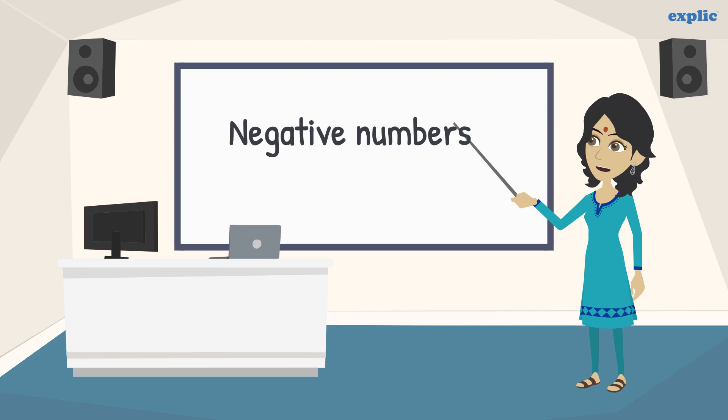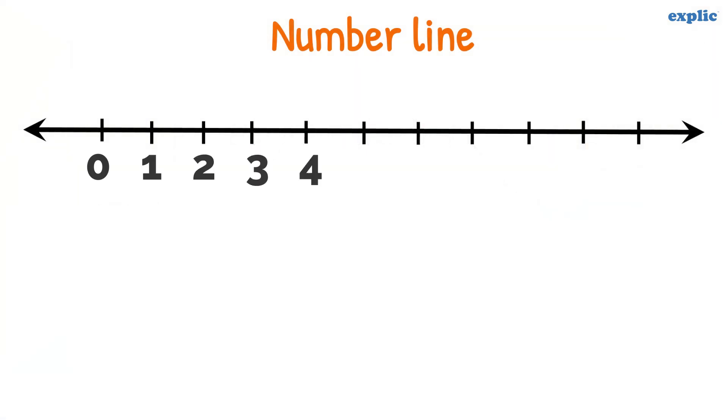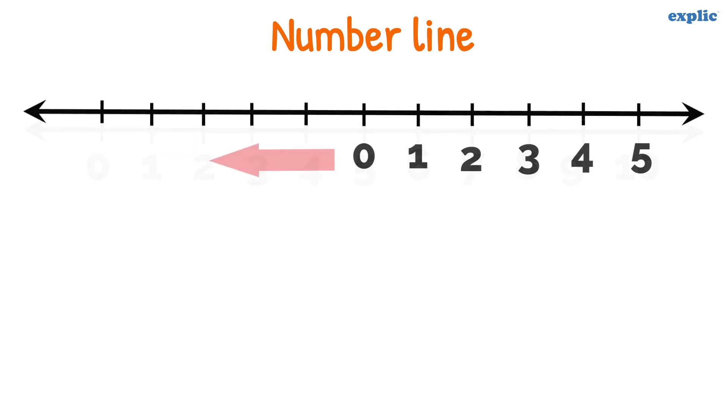Negative numbers are the numbers that are less than zero. A number line is a straight line with numbers marked at equal intervals. On a number line, negative numbers are shown on the left side of the zero.